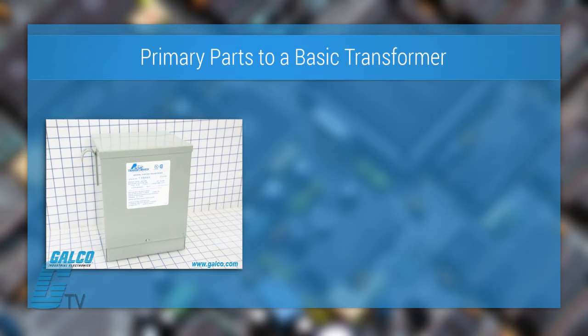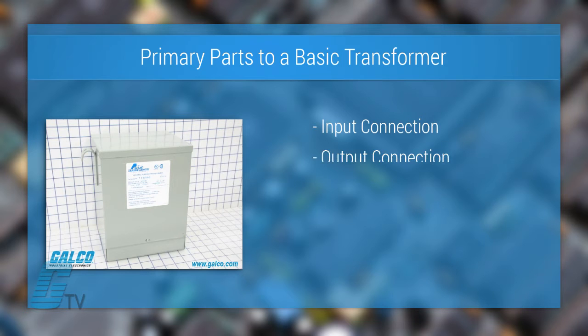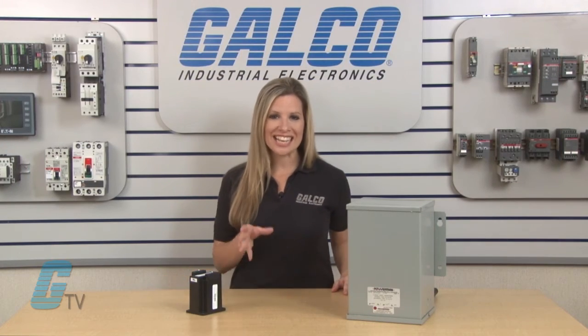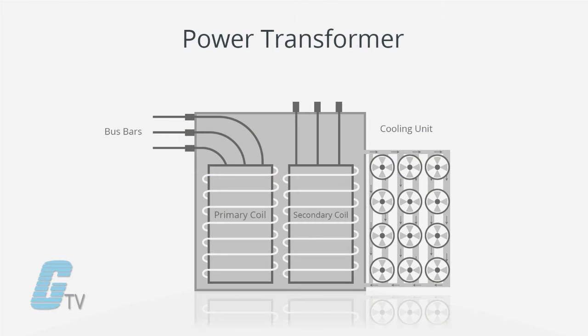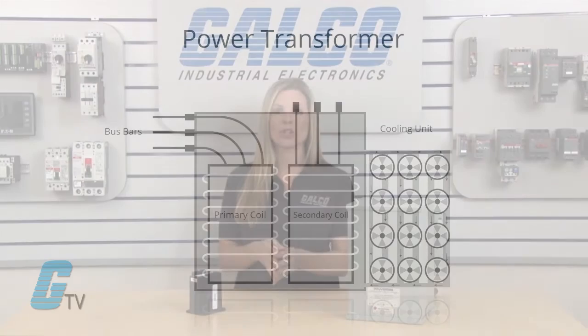There are four primary parts to a basic transformer: the input connection, the output connection, the coils, and the core. The input connections on the input side of a transformer is called the primary side because the main electrical power to be changed is connected at this point. The output connections is the output side or secondary side of the transformer where the electrical power is sent to the load.